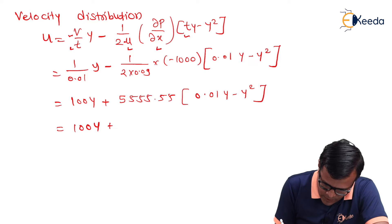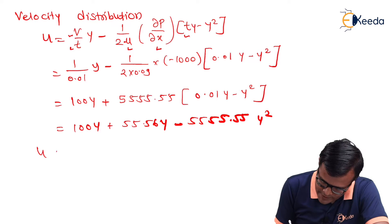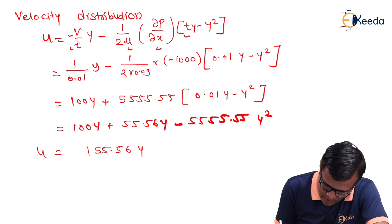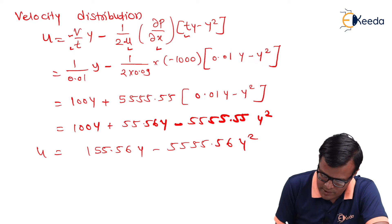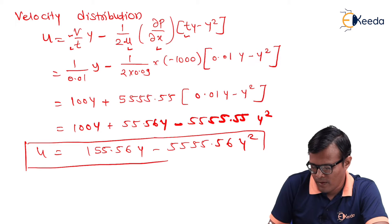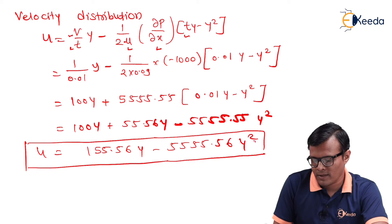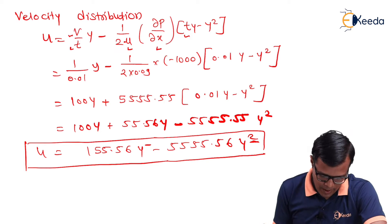So, 100y plus 55.56y minus 5555.56y². So, u finally becomes 155.56y - 5555.56y². So, u depends on second power and first power, means it is nothing but a parabolic curve. So, this is the distribution that we have to find.